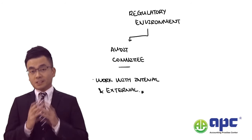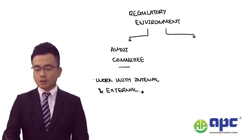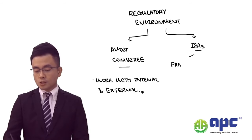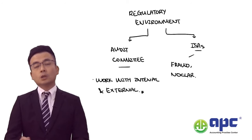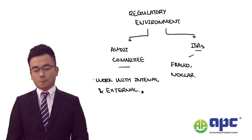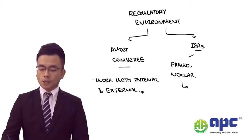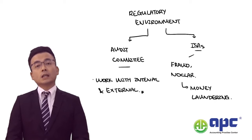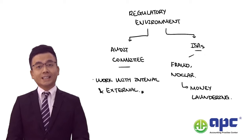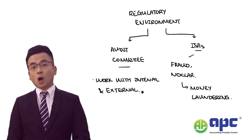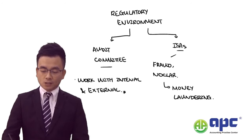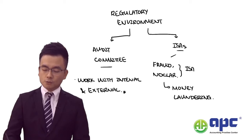After we've grasped this idea, the next thing will be related to the ISAs for the regulatory environment. Firstly, there is a separate branch related to fraud and NOCLAR. NOCLAR stands for non-compliance with laws and regulations by the client's company. A minor area related to this will be money laundering, which I will discuss later. The idea behind money laundering is that the origin of a client's money is from a black source — coming from crime — and the client launders it to turn the crime money into clean money. The standards covering this first branch are ISA 240 and ISA 250.